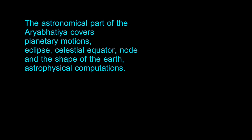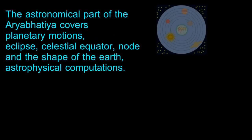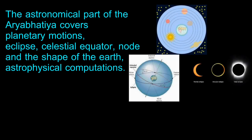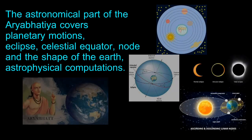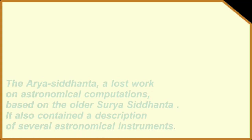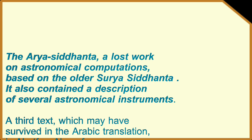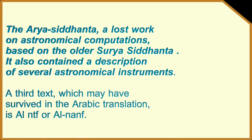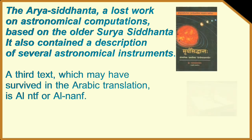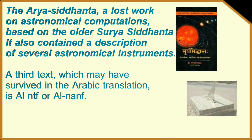The astronomical part of the Aryabhattiya covers planetary motions, eclipse, celestial equator, node and the shape of the earth, astrophysical computations. The Arya Siddhanta, a lost work on astronomical computations based on the older Surya Siddhanta. It also contains a description of several astronomical instruments.